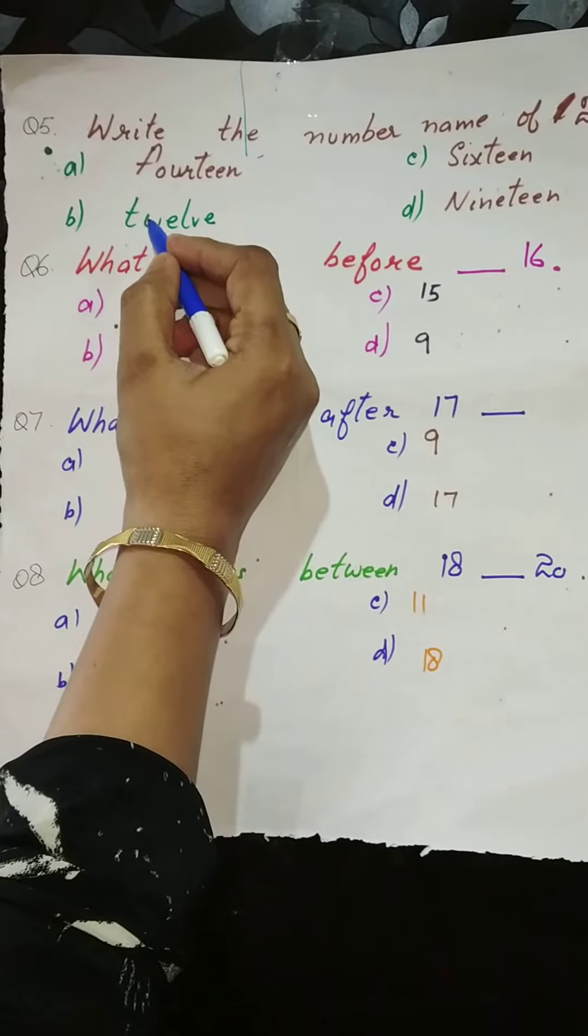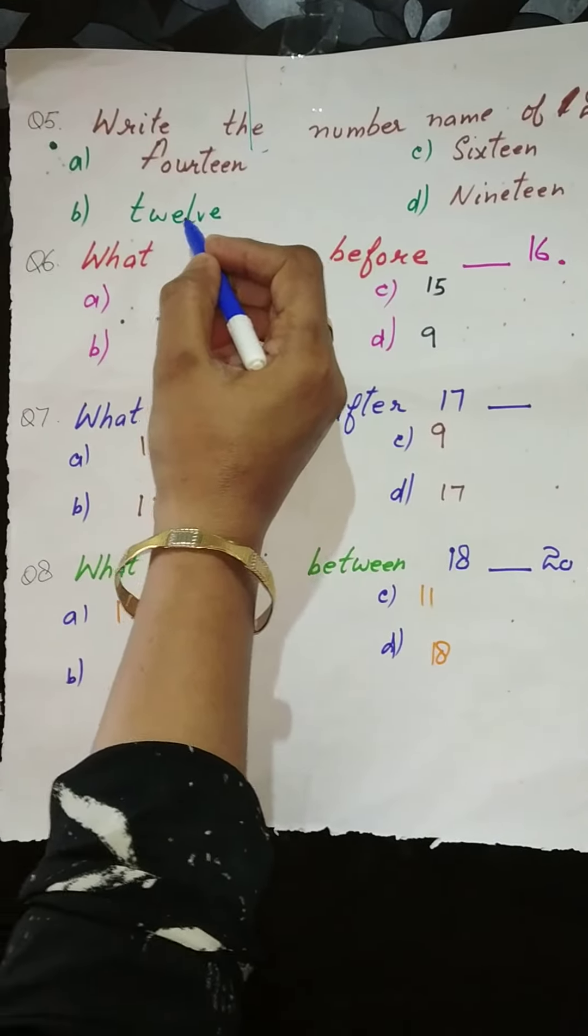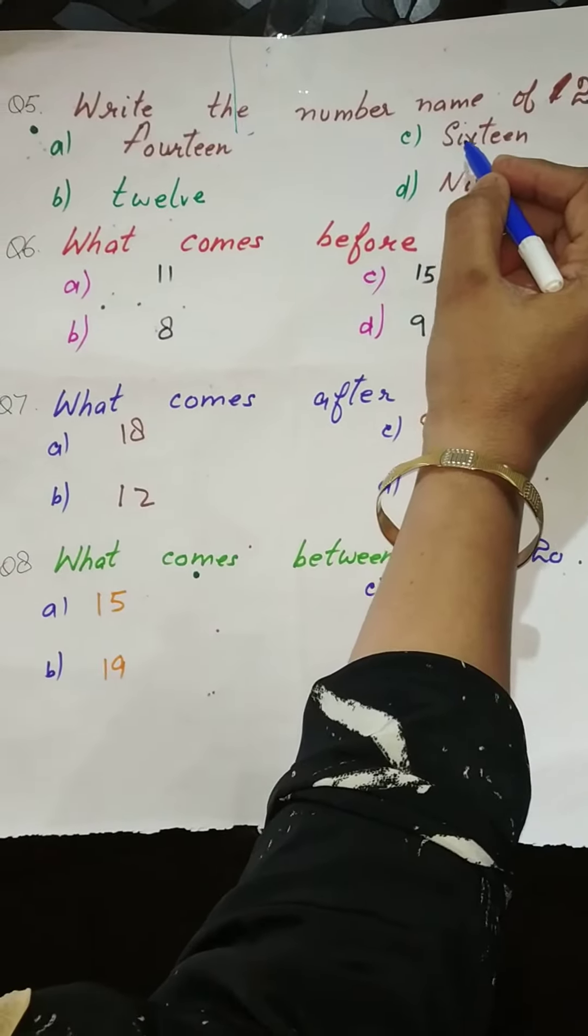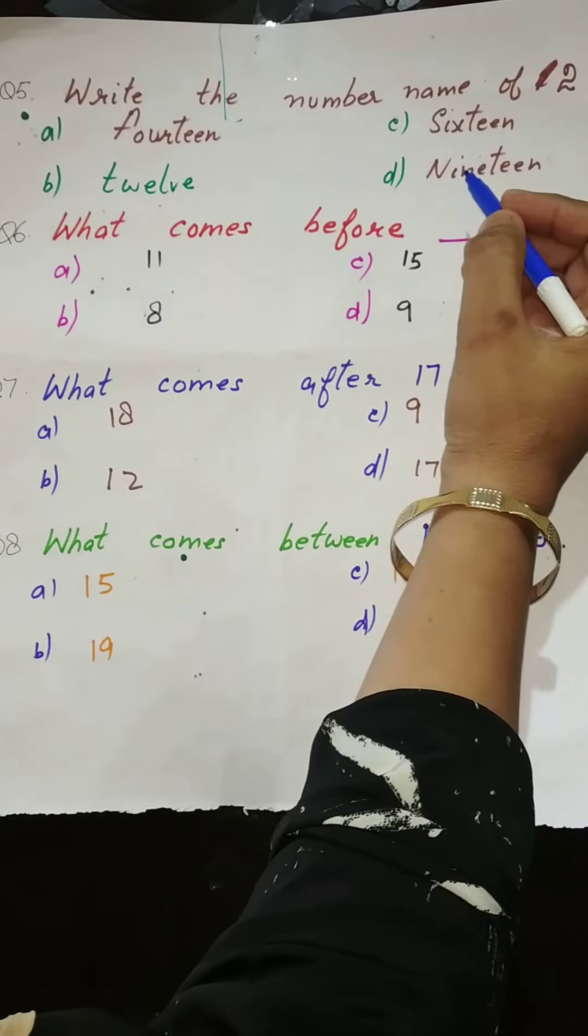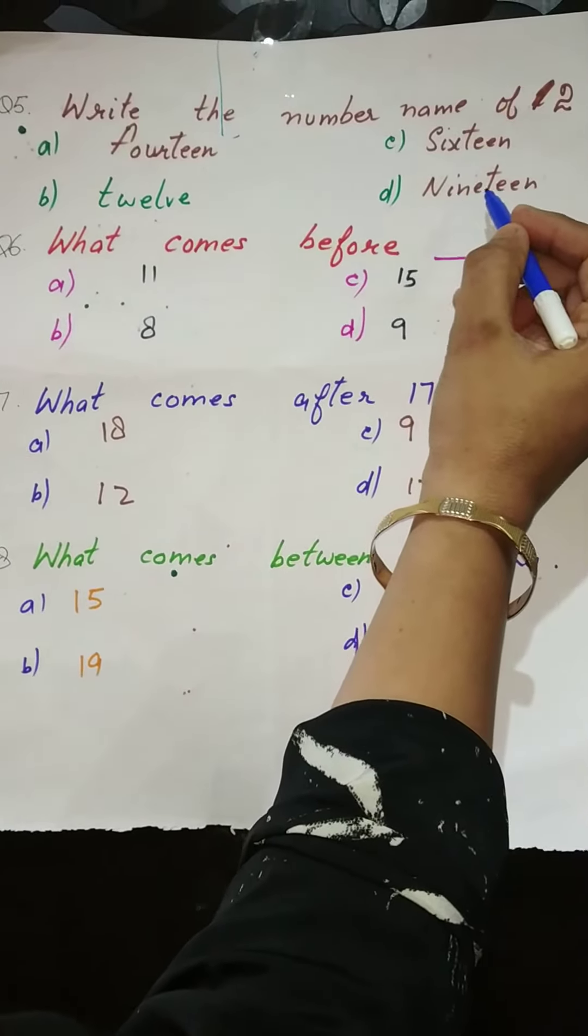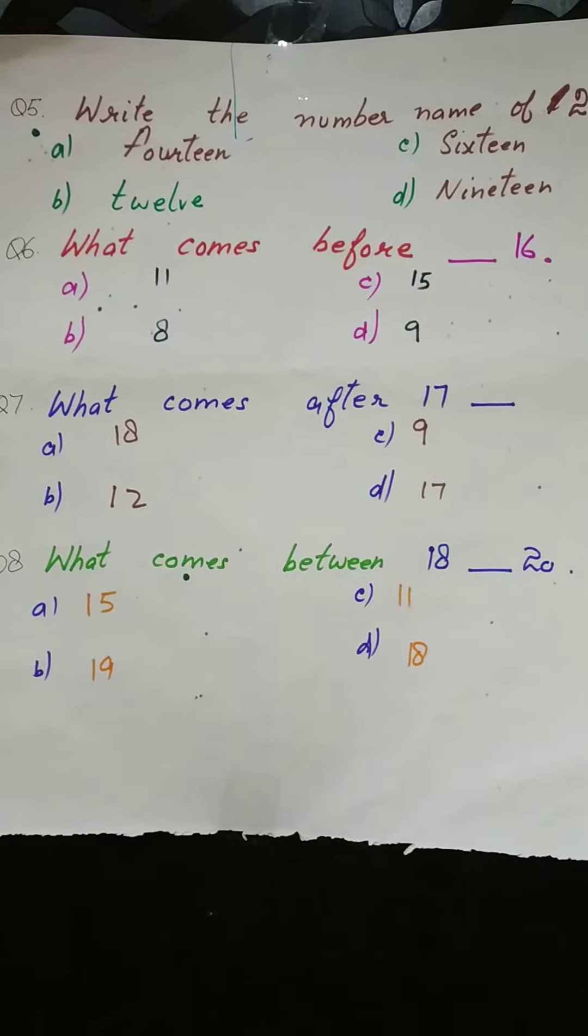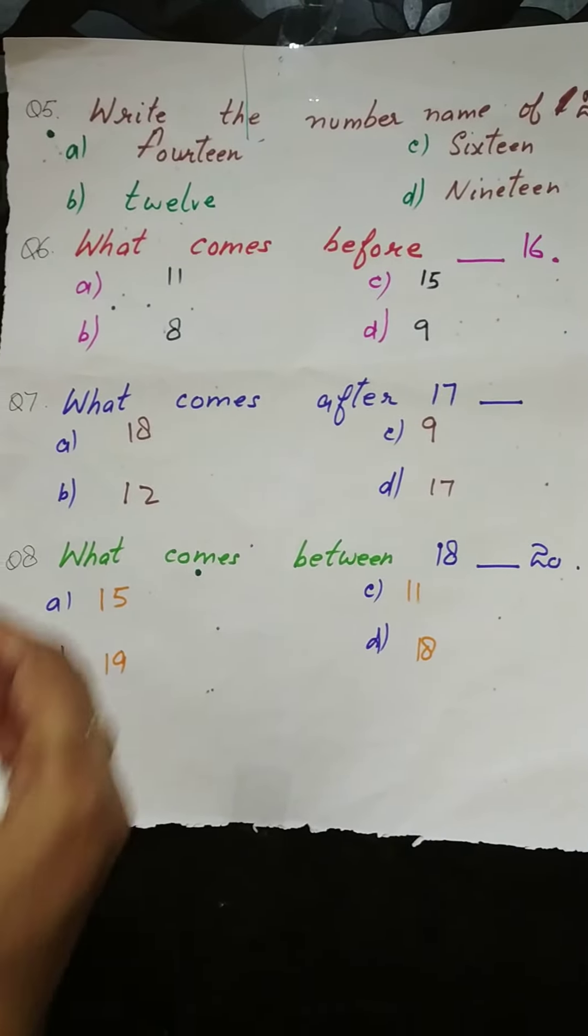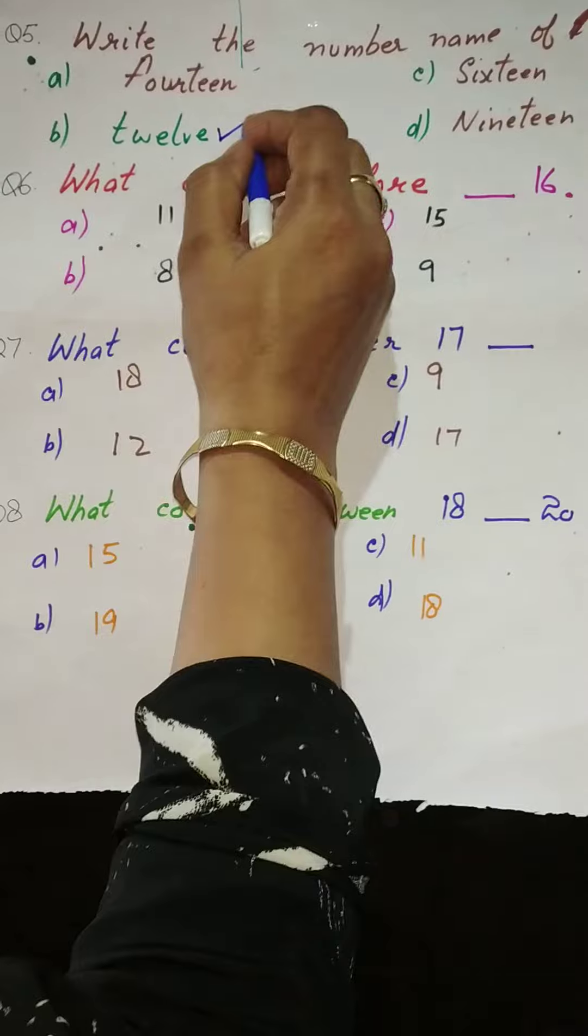Then 12, T-W-E-L-V-E. 16, S-I-X-T-E-E-N. 19, N-I-N-E-T-E-E-N. So the right option is 12, twelve. Take mark it.